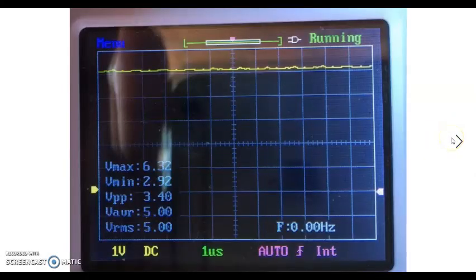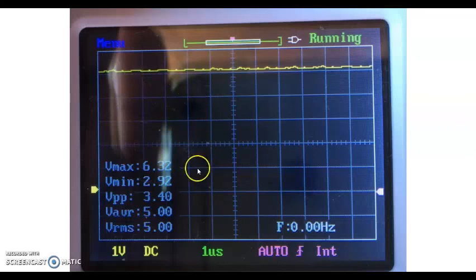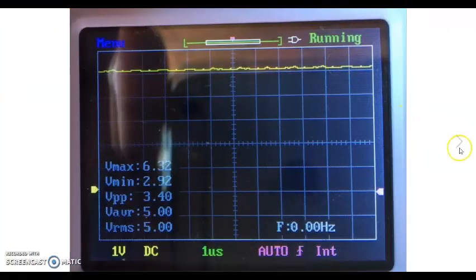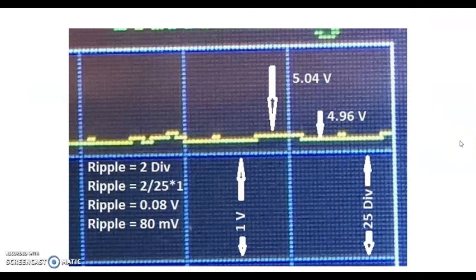Now for the ripple angle, I have taken the picture of the oscilloscope. So the zero volt is here. It's one volt division. So it's five volt here. So the one volt division is here. So I zoom this area. I zoom it more. So it's here.